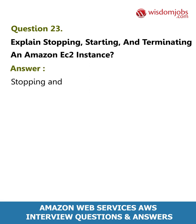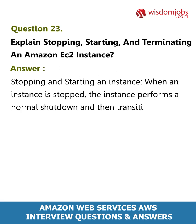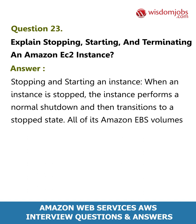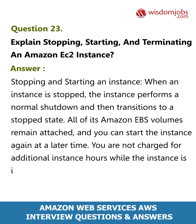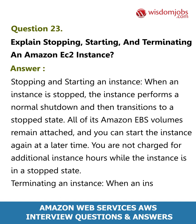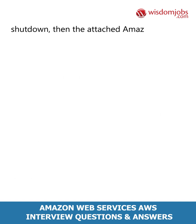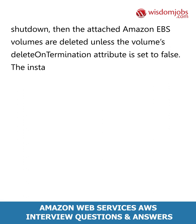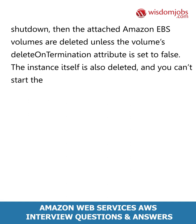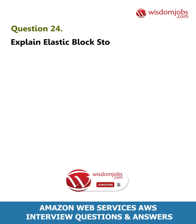Question 23: Explain stopping, starting, and terminating an Amazon EC2 instance. Answer: Stopping and starting an instance — when an instance is stopped, the instance performs a normal shutdown and you can start the instance again at a later time. You are not charged for additional instance hours while the instance is in a stopped state. Terminating an instance — when an instance is terminated, the instance performs a normal shutdown, then the attached Amazon EBS volumes are deleted unless the volume's delete-on-termination attribute is set to false. The instance itself is also deleted and you can't start it again.